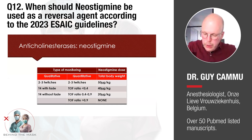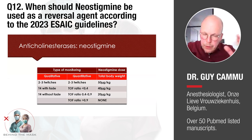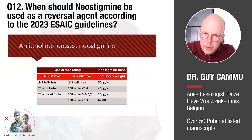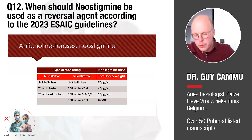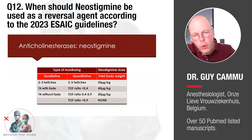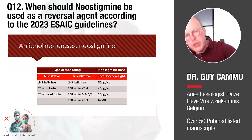They relied upon this slide, but applying the new guidelines to this slide, this slide is not valid anymore. The new guidelines suggest neostigmine is only useful when the TOF count is 4 and the TOF ratio has recovered to more than 0.2. So forget about what is on the major part of this table.